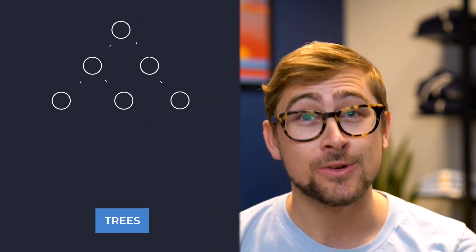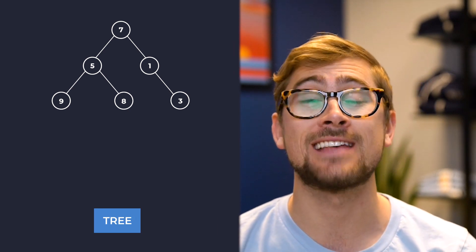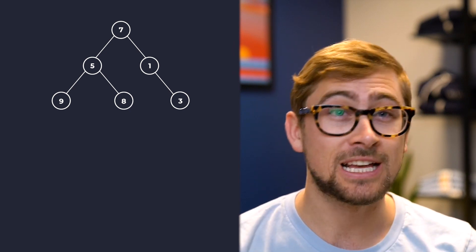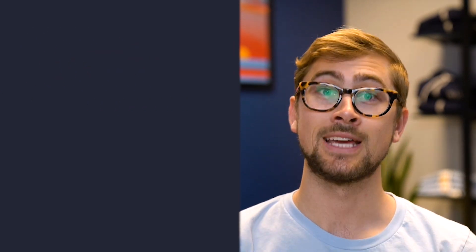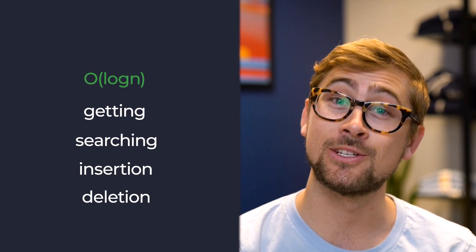Finally, let's go over binary trees. A binary tree is a data structure where a given node has a value and references at most two other nodes, referred to as its children. Unless a node is the root, it is the child of another node. There's also a binary search tree, which has the same conditions as a binary tree except for how child nodes are determined. In a binary search tree, if a child node's value is greater than its parent's, it is the right child; if a child's value is less than its parent's, it is the left child. Get, search, insertion, and deletion all cost O(log N) in a binary search tree.